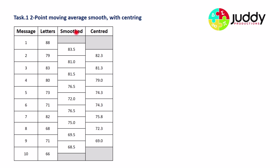Our complete table has the original data in the first two columns, the two-point moving average smooth data, and then the centered values. The first two smooth points average to 82.3 and are centered against message two, all the way down to the final two smooth values averaging to 69 centered against message nine.